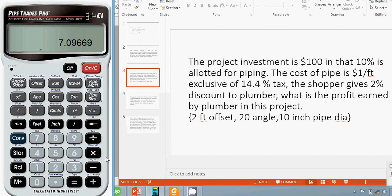From the investment, we know $10 is allotted for piping. Let me subtract it. The result is $2.90331. So this is the final earnings for the plumber.